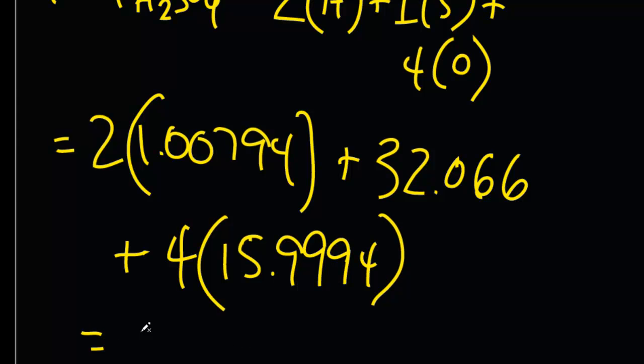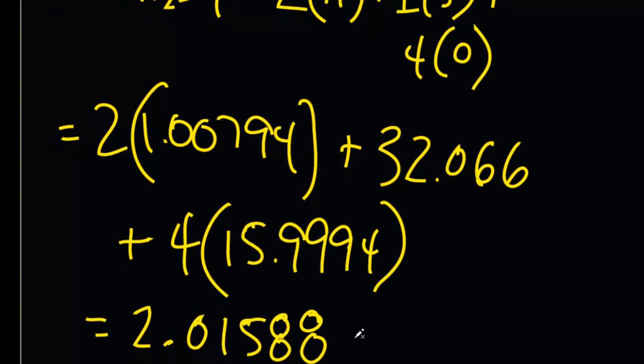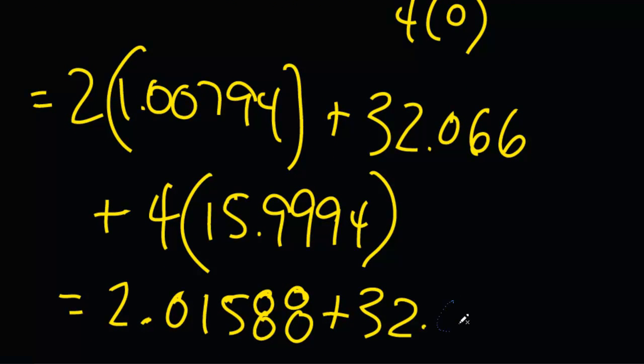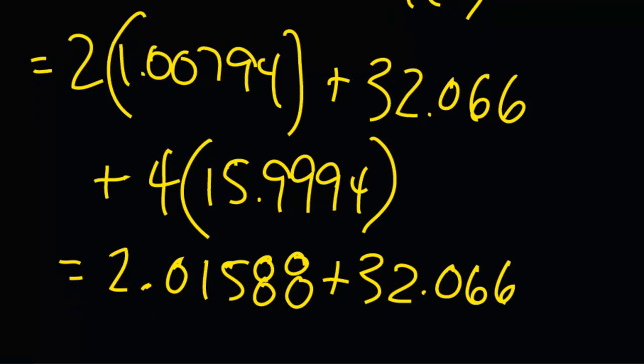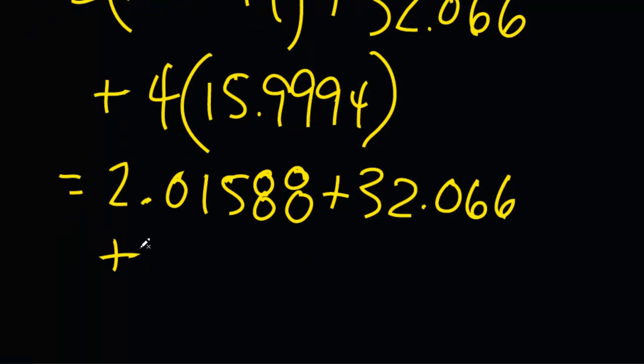Alright, let's multiply them out and then add them out according to order of operations. Remember PEMDAS? 2 times 1.00794, I got 2.01588. This one I'm just going to bring down and I'm going to add that to 4 times 15.9994. And I'm going to get 63.9976 grams per mole. And when I add all these guys up, let's see what I get.